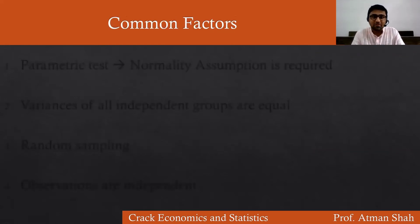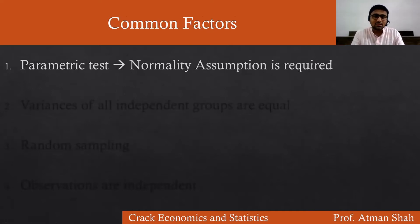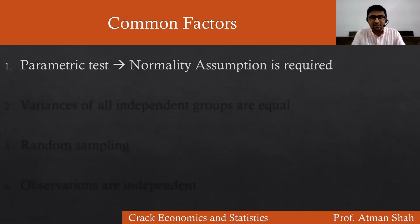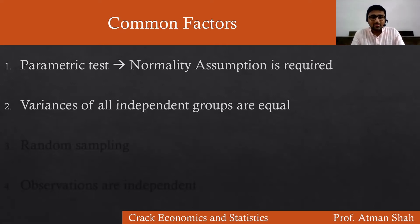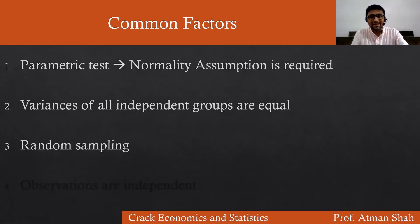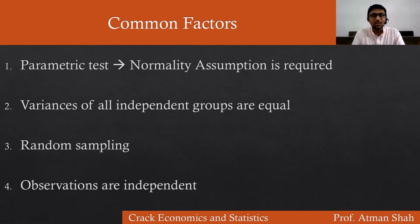What are the common factors in one-way and two-way ANOVA? First, both tests are parametric tests, which means the normality assumption is required. As discussed with the t-test, the t-test is also a parametric test. Second, variances of all independent groups are equal. Third, random sampling — we collect data randomly from a normally distributed population. Fourth, observations are independent. These are the common factors between one-way and two-way ANOVA.